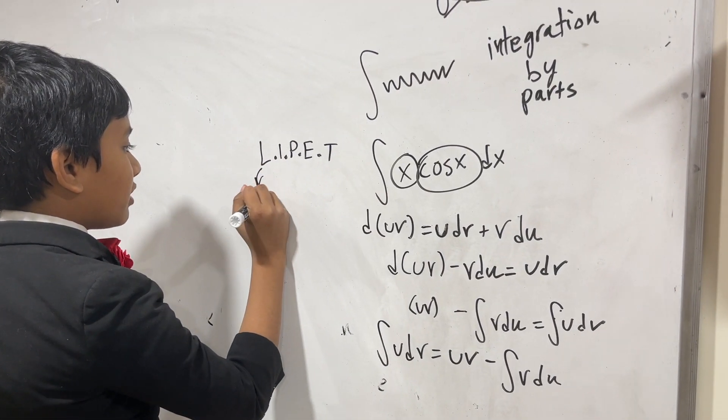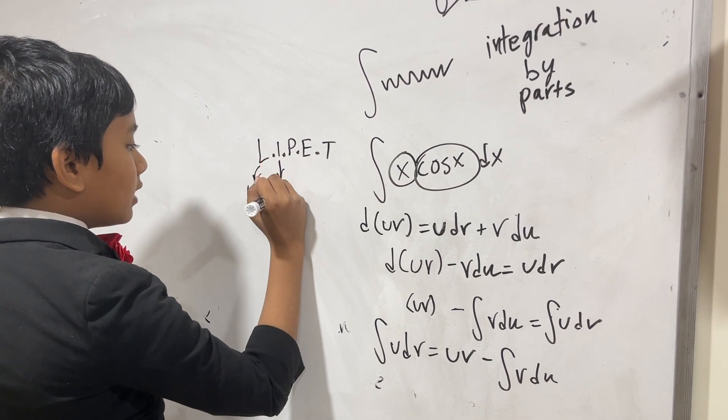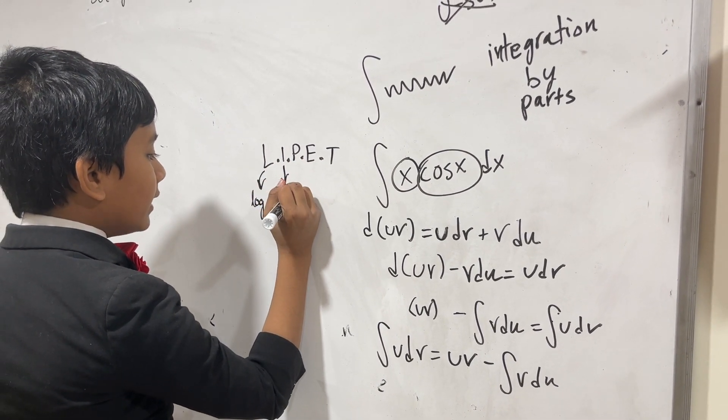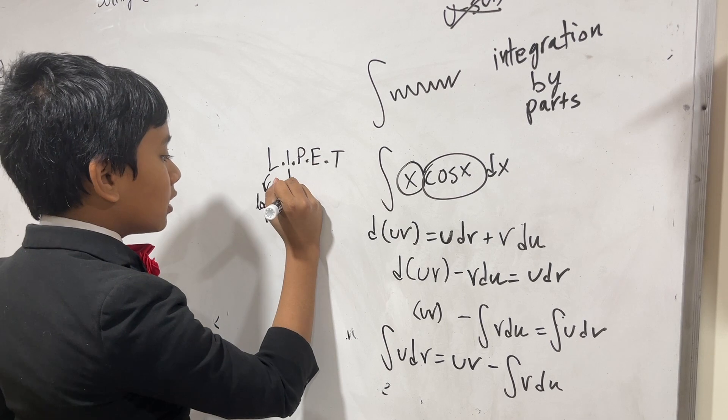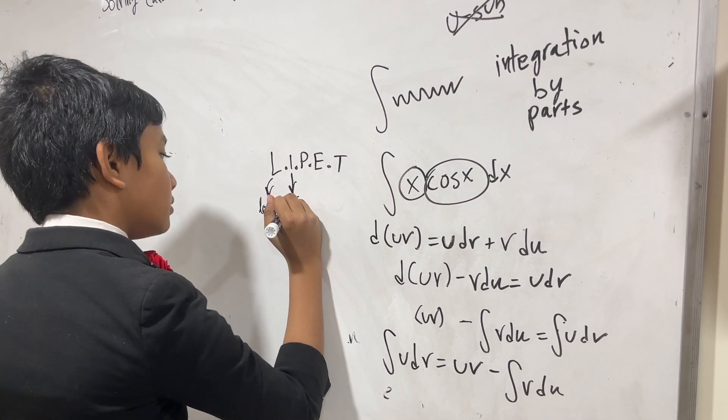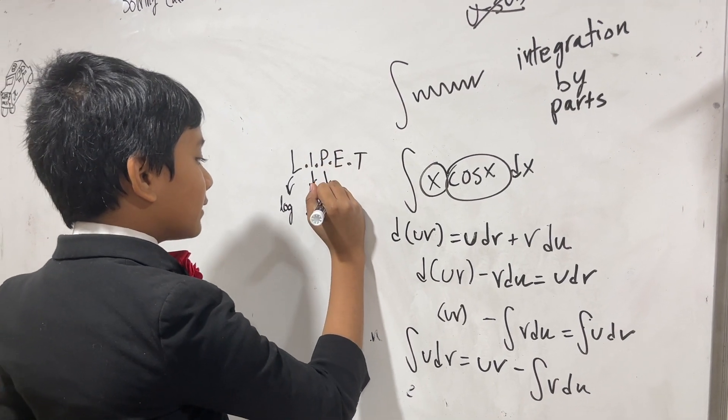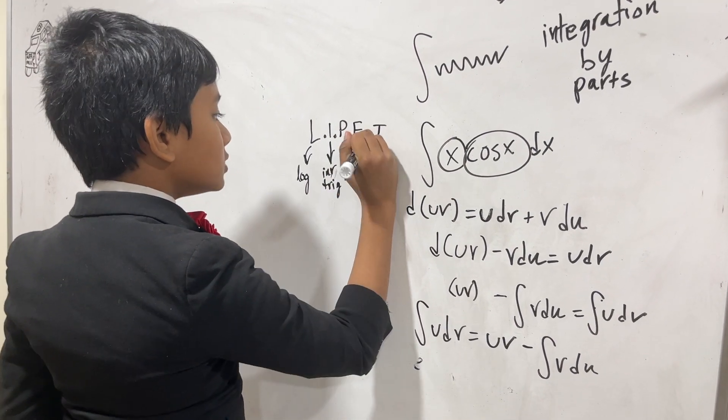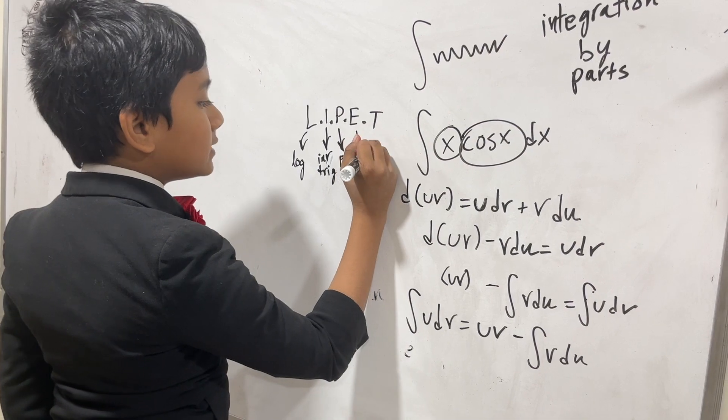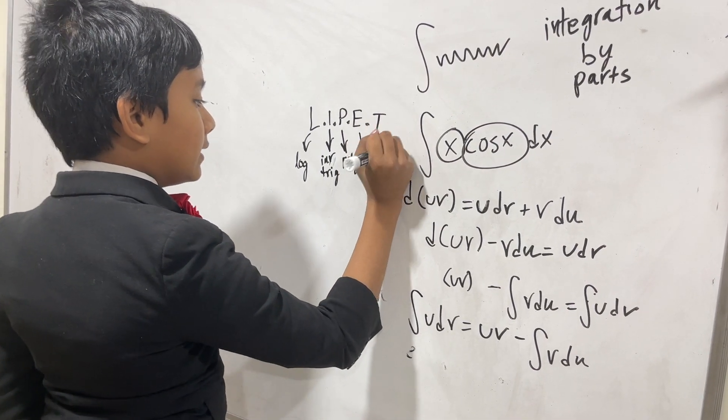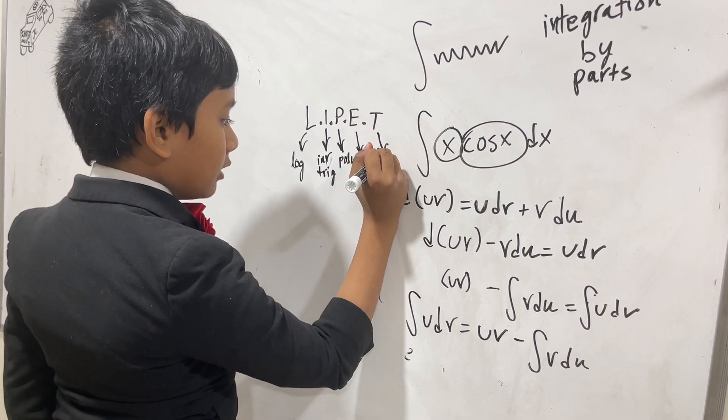LIPET says this: L is logarithmic functions, I is inverse trigs like cosec, sec, and cotan, P stands for polynomials, E stands for exponentials, and T stands for trigs.